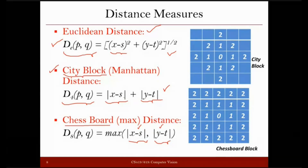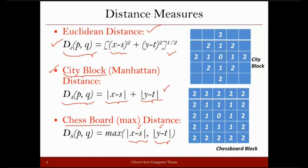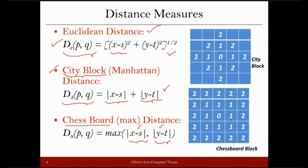Similarly, you might find places where one distance measure is more applicable — for example, when implementing on a device where you want faster computation or less memory, you might prefer city block distance. In general, all these distance measures can be defined with the help of the LP norm, also called the Minkowski norm or Minkowski distance. The LP norm is defined with respect to two vectors of k dimensions: x1, x2, ..., xk and y1, y2, ..., yk.